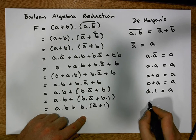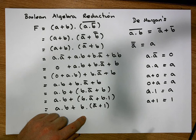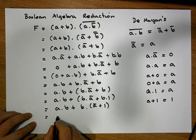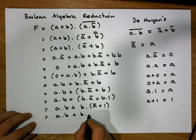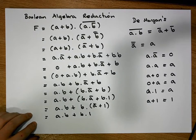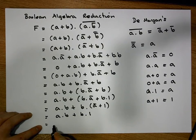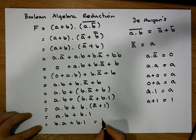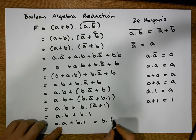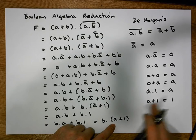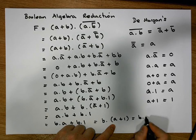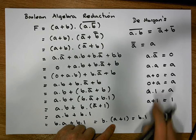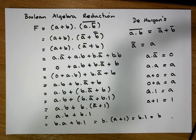Anything ORed with 1 equals 1, so that term reduces to B AND 1. Applying the commutative law, this is the same as B AND (A OR 1). Anything ORed with 1 is simply 1, so this becomes B AND 1. And anything ANDed with 1 is itself, so the final result is simply B.